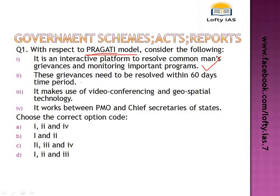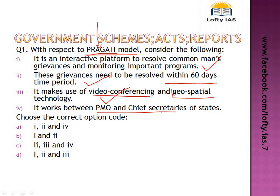The grievances need to be resolved within 60 days — the Prime Minister gave this instruction to chief secretaries, and this is a correct statement. It makes use of video conferencing and geospatial technology: video conferencing connects the PMO with chief secretaries, and bureaucrats use geospatial technology to assess program implementation. The fourth statement says it works between PMO and chief secretaries only — however, it actually has a three-tier system: Prime Minister's office, secretaries at the union level, and chief secretaries of the state. So statements 1, 2, and 3 are correct, and the answer is D.